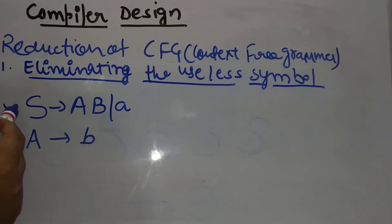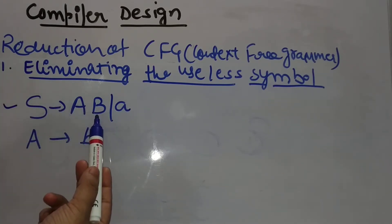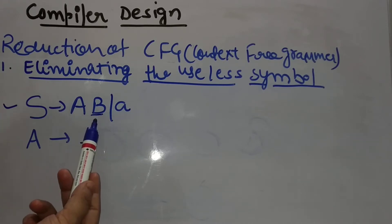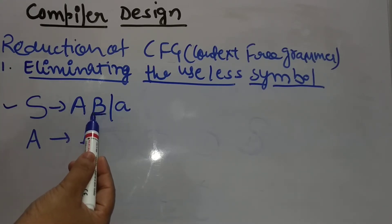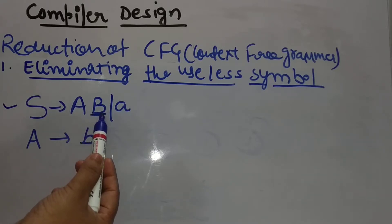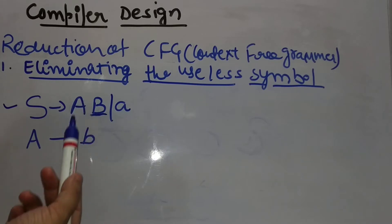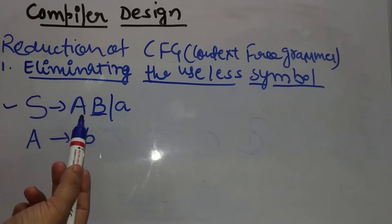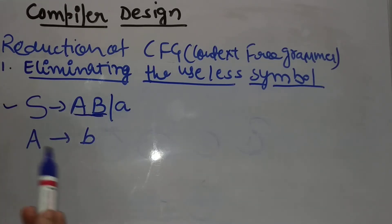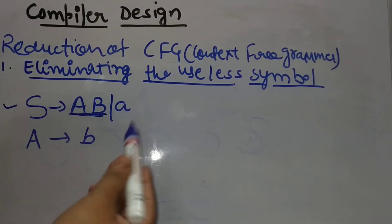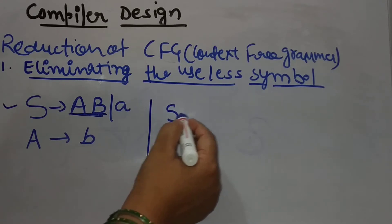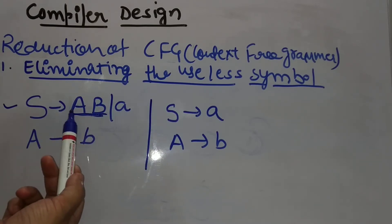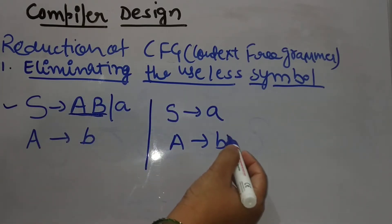So friends, if we look at source symbols first, then source symbol comes in capital A and capital B, but B is not used to generate any terminal. So it means B is our useless symbol here, so we will not use B. Any production where B is a non-terminal added, we have to remove it. When we remove B, we have to remove A as well. We have to reduce this whole grammar. So the next production will be S tends to A, and A tends to B.